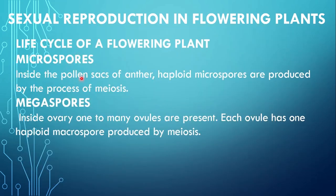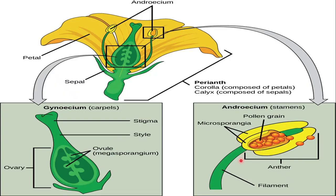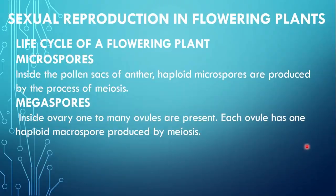Flowering plants mein alternation of generation ka process use karte hue spores aur gametes ki production hoti hai. Sporophyte generation mein two types ke spores bante hain: microspores aur megaspores. Microspores jo ke flower ke male reproductive part mein bante hain, aur megaspores jo ke flower ke female reproductive part mein bante hain. Inside the pollen sacs of anther, haploid microspores are produced by the process of meiosis. Stamen ke two parts hote hain: thread-like structure called filament, aur sack-like structure called anther. Is pollen sac mein meiosis ke process ke through pollen grains ya microspores bante hain, aur yahi microspores male gametophyte ko banate hain.